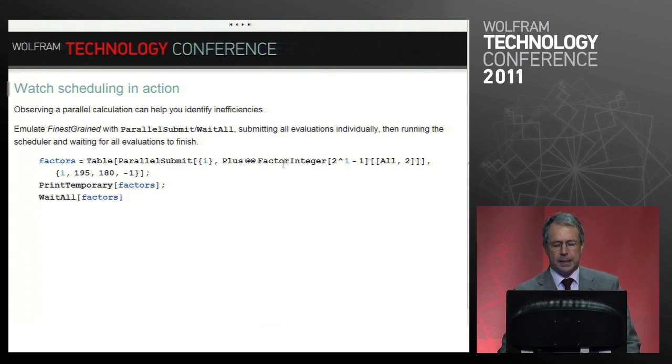Now you can see the scheduling in action. The finest grain parallelism generates one job for each individual evaluation. I can do that by hand by using parallel submit to submit all the individual factor integers, generate a table of them, and then wait for all of them to finish. While it works, it will display what is going on.